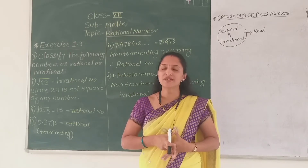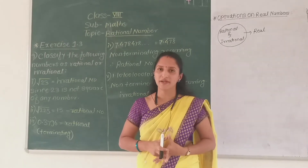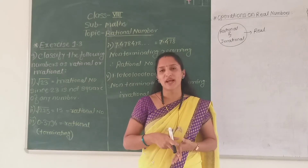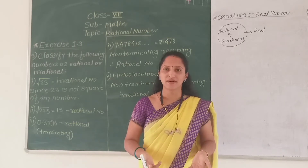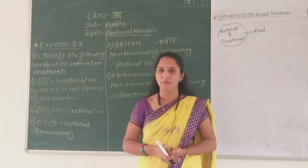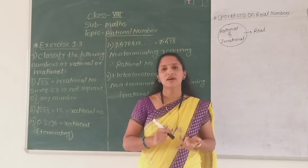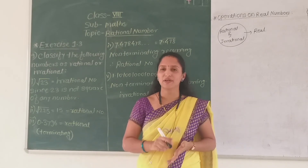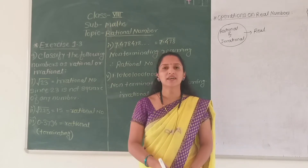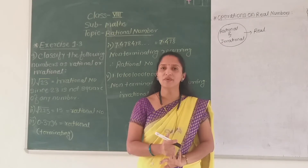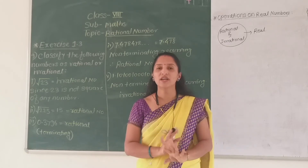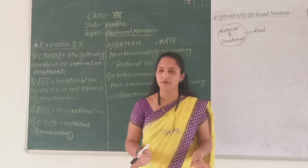Rational numbers are closed under all mathematical operations. That means when we add, subtract, multiply, or divide two rational numbers, we always get a rational number. Rational numbers are also commutative, associative, and distributive with respect to addition and multiplication.